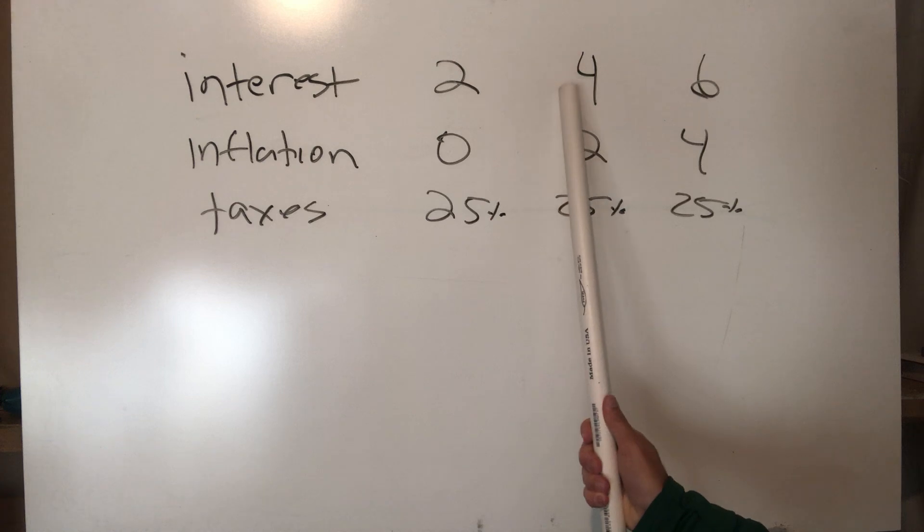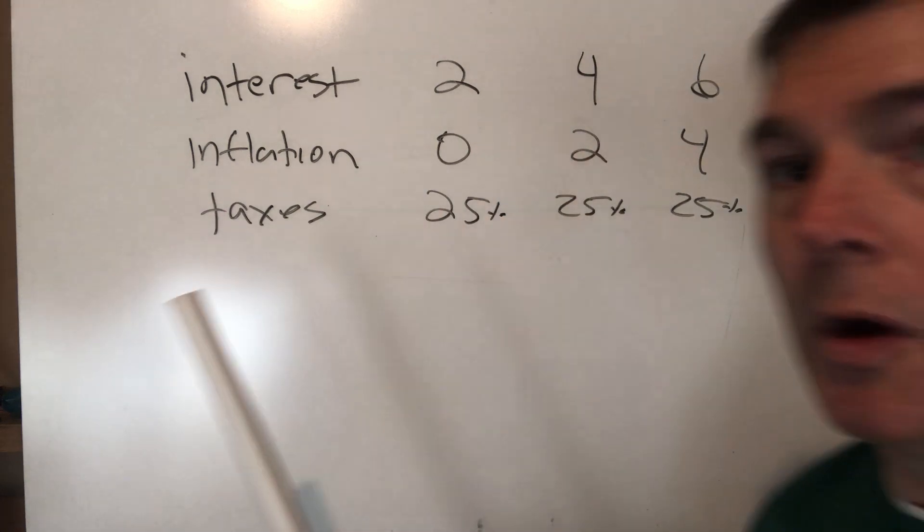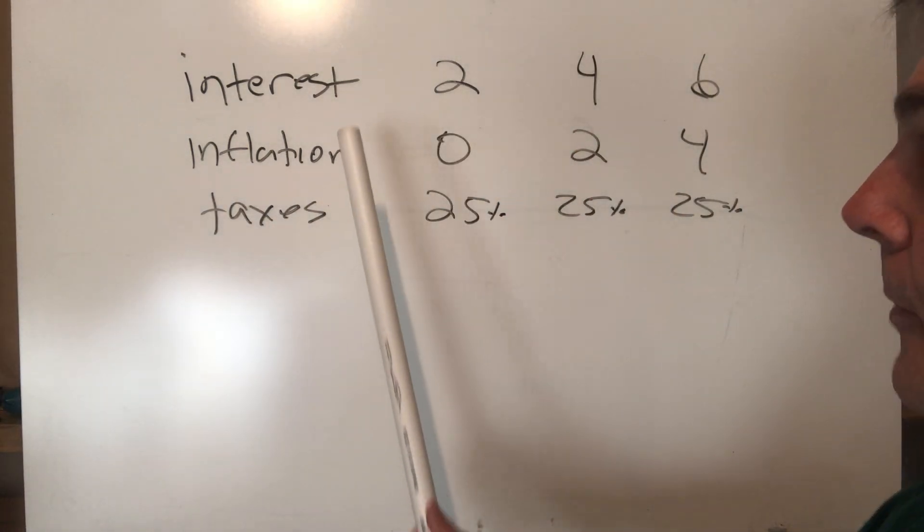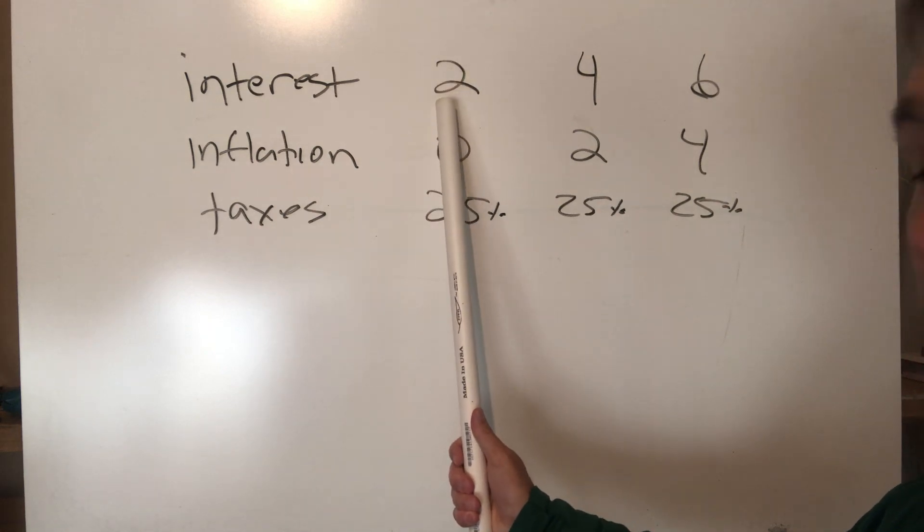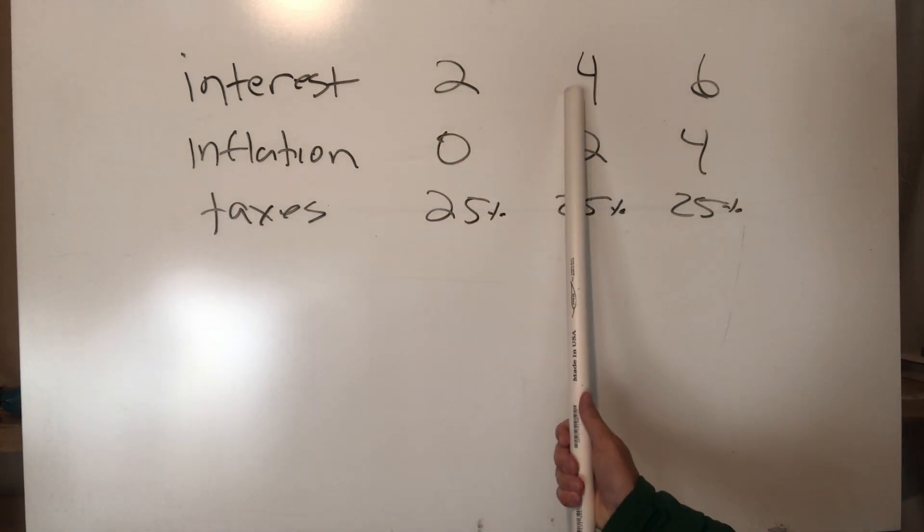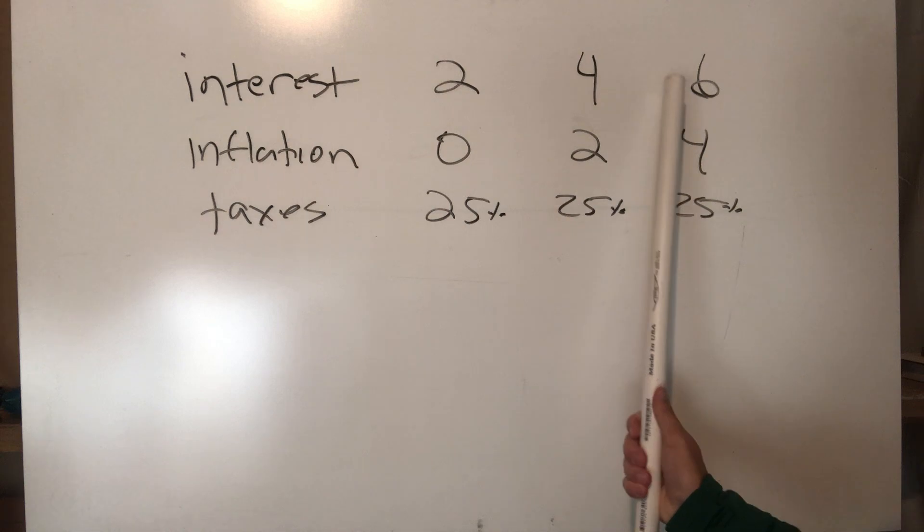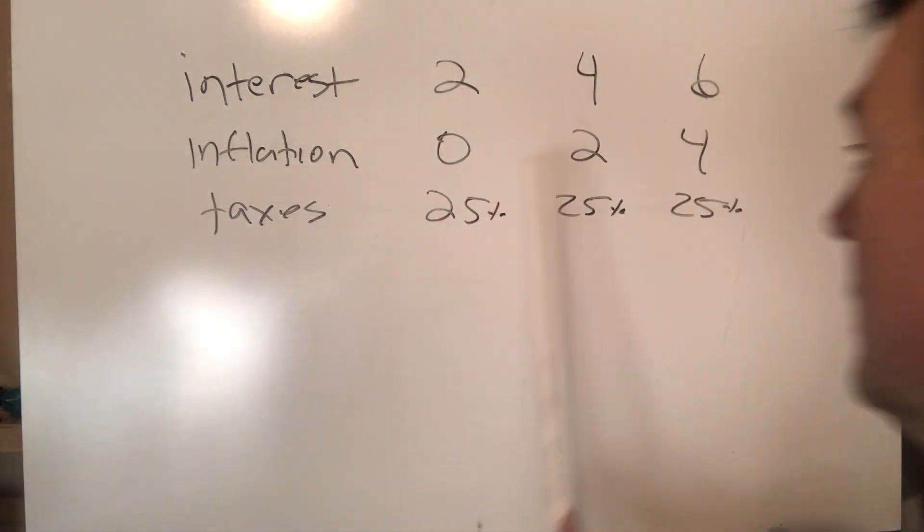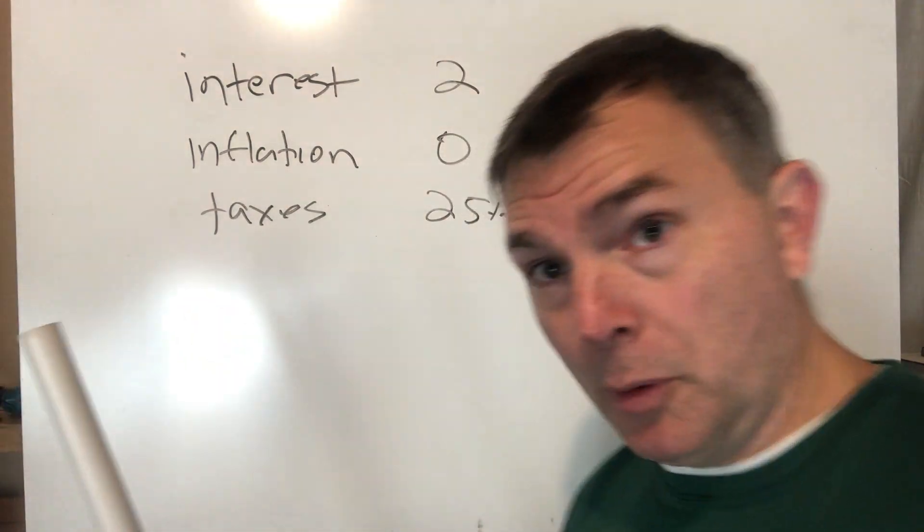Here we've got three scenarios: interest rate of 2% with no inflation, interest rate of 4% with 2% inflation, and interest rate of 6% with 4% inflation. With me so far? We get taxes at 25% across the board. So inflation is always two percentage points lower than interest rates.